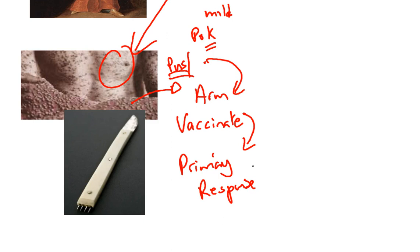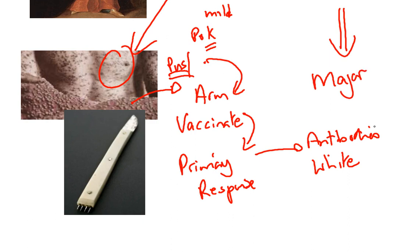And this meant that they had produced lots of antibodies and white cells to fight smallpox. If then they were infected by the major form of disease, the antibodies that were already present, and the white cells already present, would kill off the variola major, protecting the person from the disease.